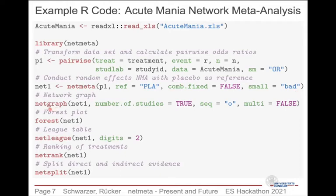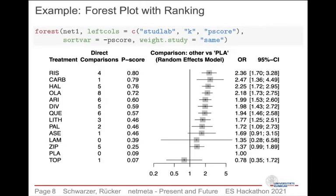The commands for the network graph, forest plot, and league table are straightforward — in most cases you just use the network meta-analysis object with some additional arguments. Here you can see all the network estimates comparing these treatments with placebo, the number of studies providing each comparison, and the P-scores for the ranking. The forest plot is sorted by decreasing P-score, so the best treatments are at the top and the worst at the bottom. Most of the treatments are clearly superior to placebo with regard to response rate.